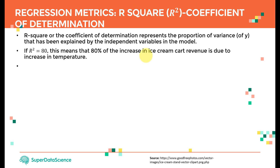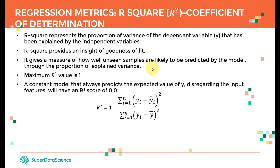In this lecture we're going to cover an important metric: R-square, also known as the coefficient of determination. It represents the proportion of variance of y that has been explained by the independent variables in the model x. Let's take a look at a practical example.